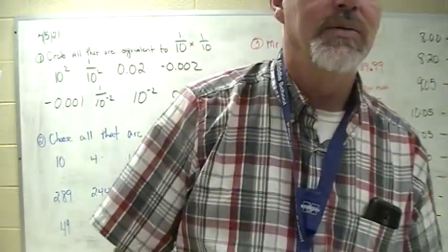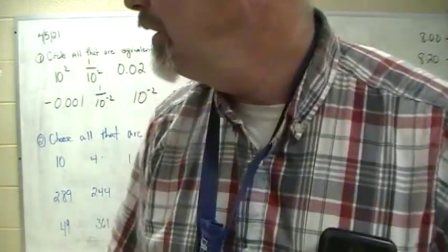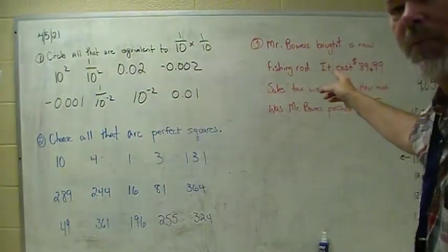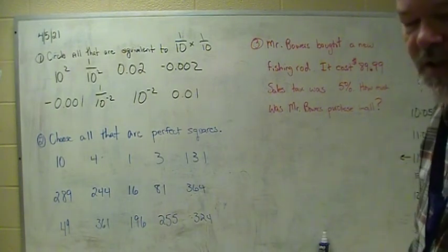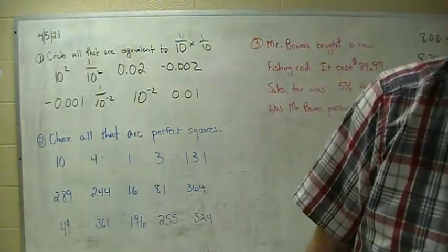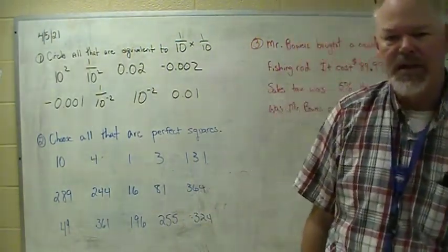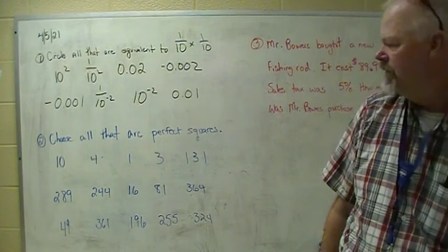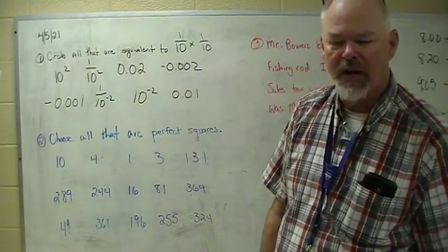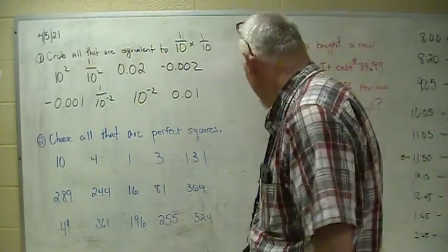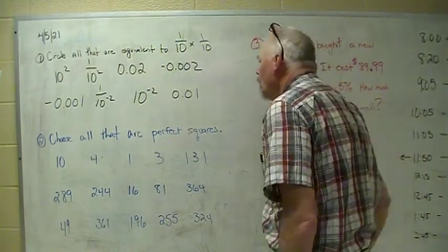The last one is a word problem where Mr. Bowers bought a new fishing rod. It cost $89.99, sales tax was 5%. How much was Mr. Bowers' purchase in all? Get these down, get the answers, and then turn this back on and see how you did. Pause it right now, get these written down and do the questions. If you don't have them done, pause this thing right now because I'm getting ready to do them.